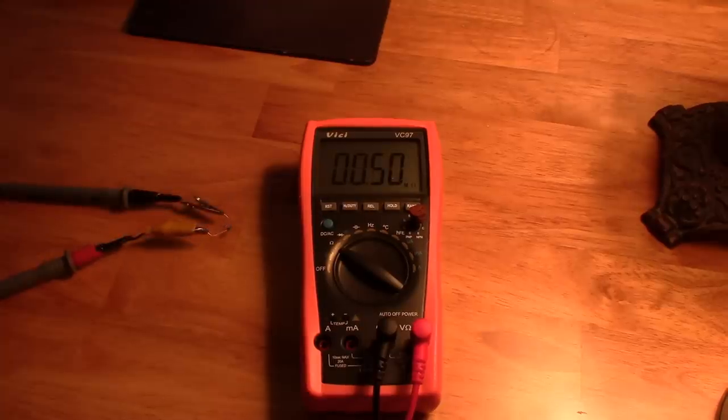Here's the 1N5711 Schottky. It's measuring a back resistance of .5 megs. Very good diode.